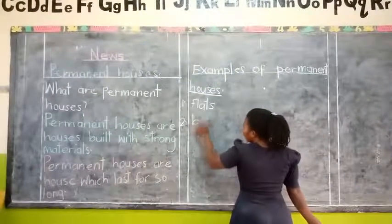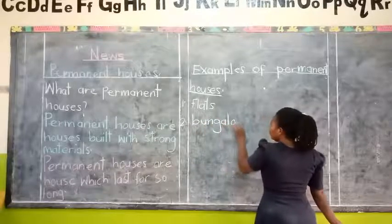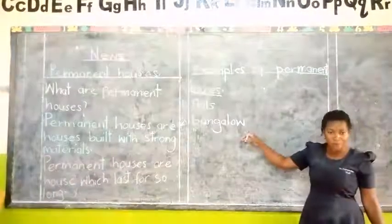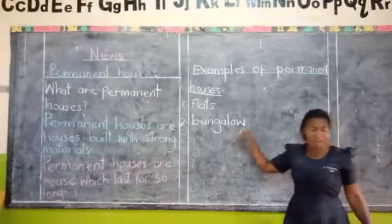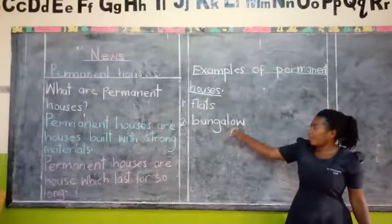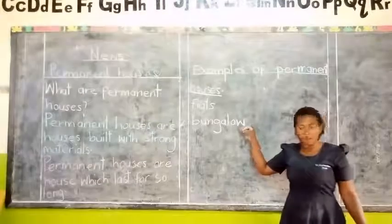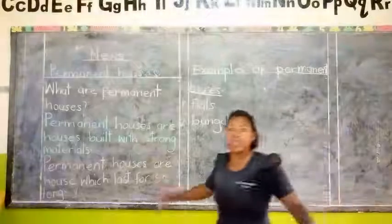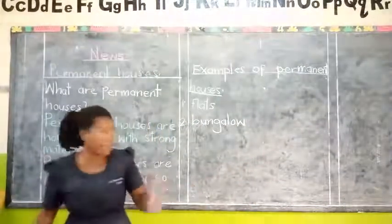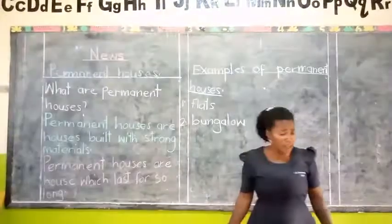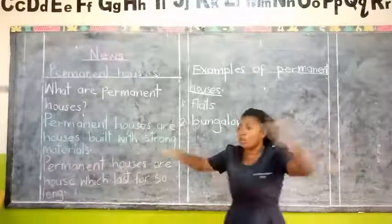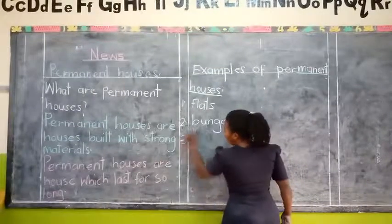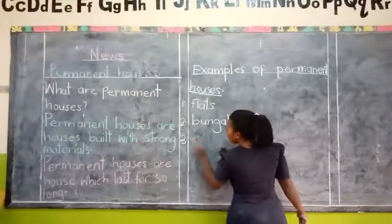The second example of permanent houses is bungalow. Can you spell the word? B-U-N-G-A-L-O-W. A bungalow is a permanent house. It has got many rooms and different activities are done in the house — it is very big with different partitions. That is a bungalow.